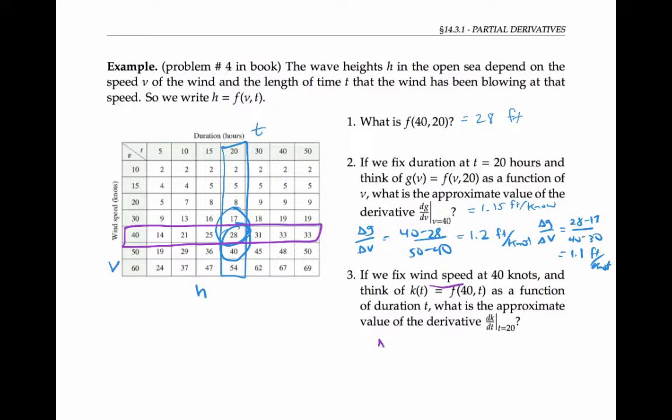Which we can approximate by the change in k over the change in t. If we use these two numbers here, we get the change in k is 31 minus 28, and this corresponding change in t is 30 minus 20. This calculates to 0.3 feet per hour. Or we can use these two numbers and get 28 minus 25 divided by 20 minus 15, which gives us 0.6 feet per hour.